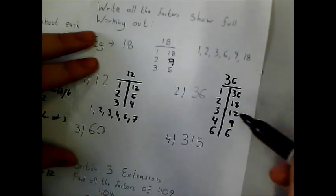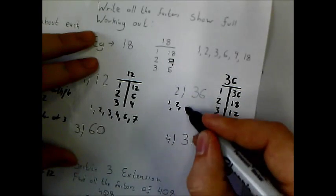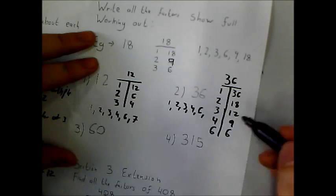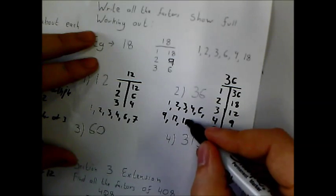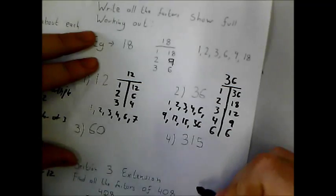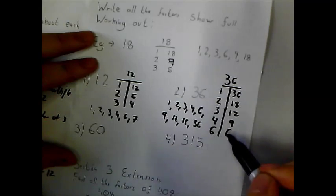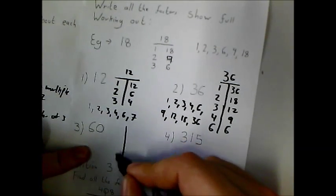So my factors of 36 are 1, 2, 3, 4, 6, 9, 12, 18, and 36. And notice how this has an odd number of factors here. And that's because it's a square number.